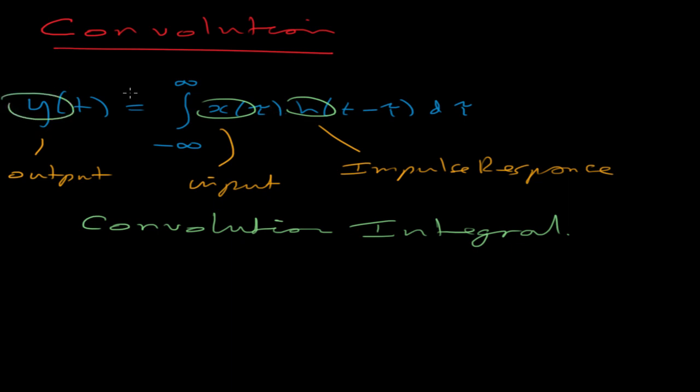In terms of control theory what we have here is some intrinsic property of the system, the impulse response. We apply some arbitrary continuous input, and we get an output. This convolution can be used to obtain the output for a system given any input.